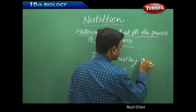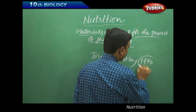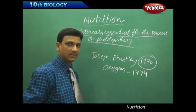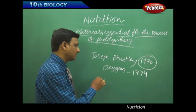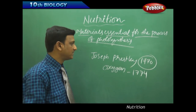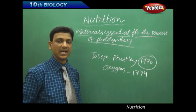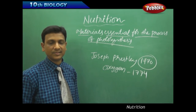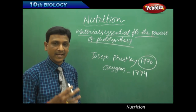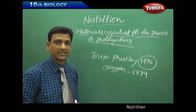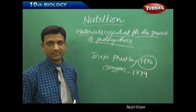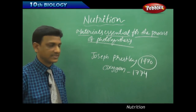Joseph Priestley conducted a series of experiments in 1770, and finally in 1774 he found oxygen, but he did not give it the name oxygen — Lavoisier coined the name oxygen. The experiments conducted by Priestley were to show that the air contains some substance which is important for the life of animals.